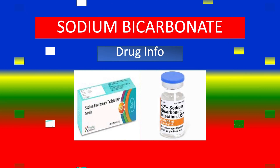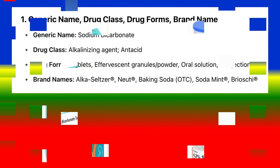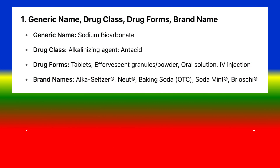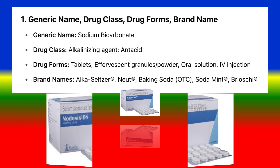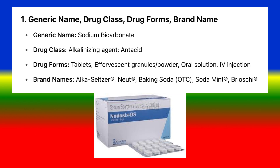Generic name: sodium bicarbonate. Drug class: alkalinizing agent, antacid. Drug forms: tablets, effervescent granules, powder, oral solution, IV injection. Brand names: Alka-Seltzer, Neut, Baking Soda, Soda Mint, Brioschi.